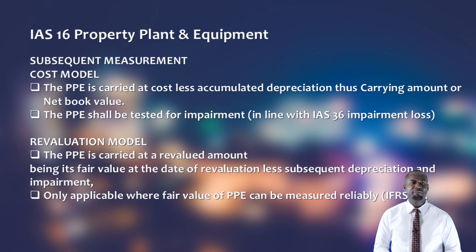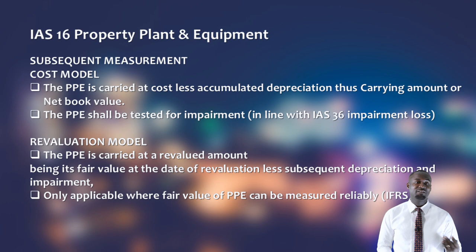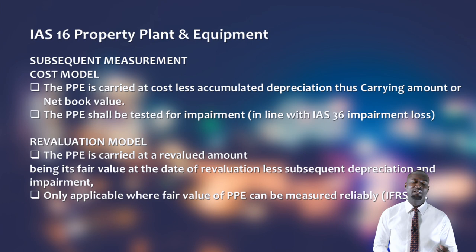For subsequent measurement of PPE, the standard allows two methods. The first is the cost model, under which the PPE should be carried at the initial cost — comprising the purchase price, directly attributable costs, and site restoration — less any accumulated depreciation. If you adopt the cost model, you keep the asset at its carrying amount, or net book value, which is the cost of the asset less accumulated depreciation.